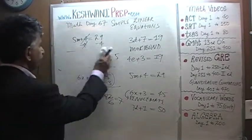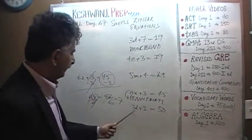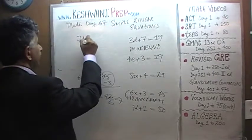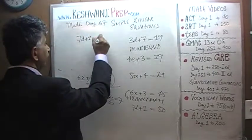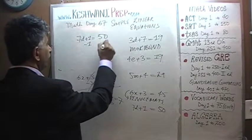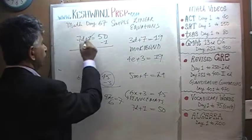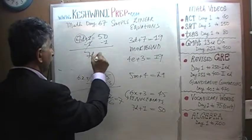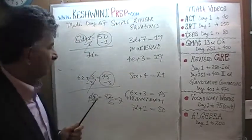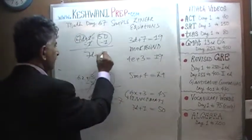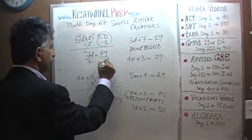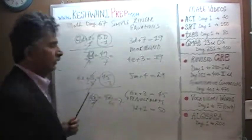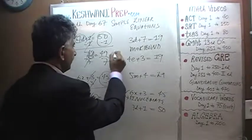Let's do the last one: 7d plus 1 equals 50. Subtract 1 from both sides and we end up with 7d comes down. 50 minus 1 is 49. Divide both sides by 7 — 7 cancels out — and d equals 49 over 7, which is 7.